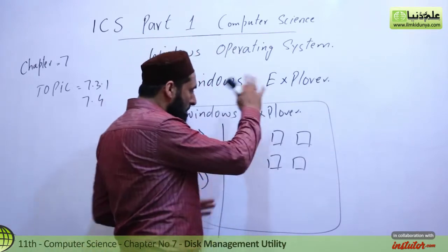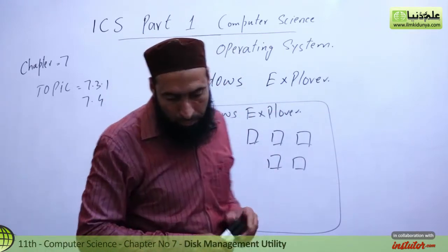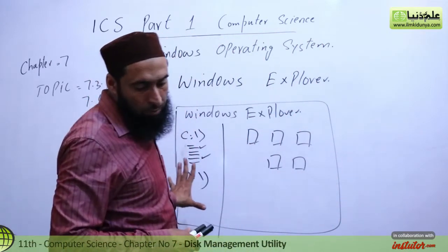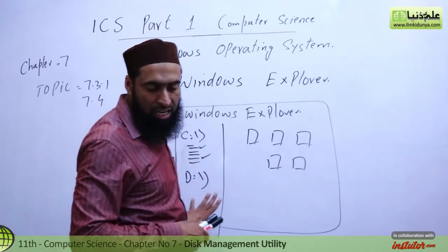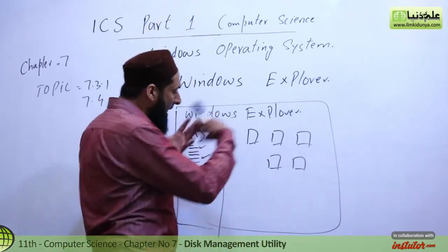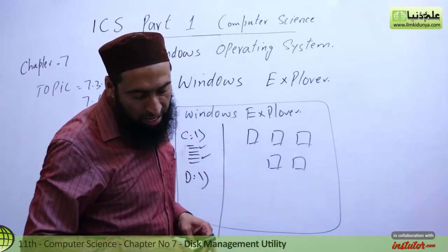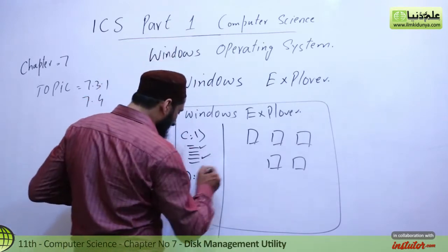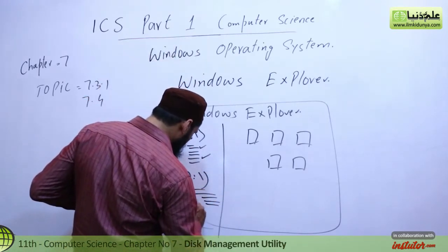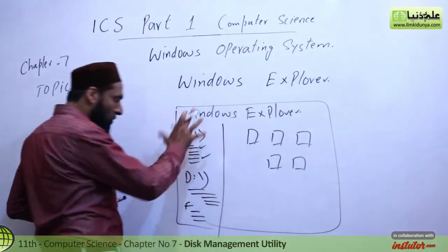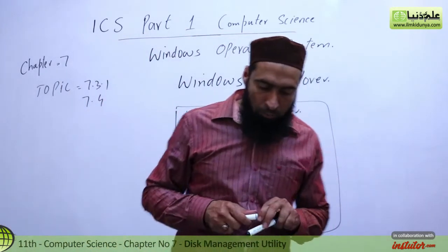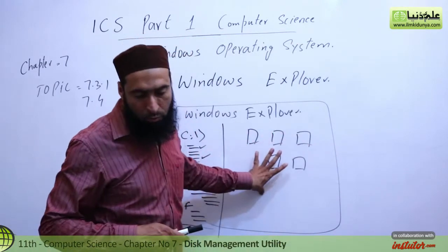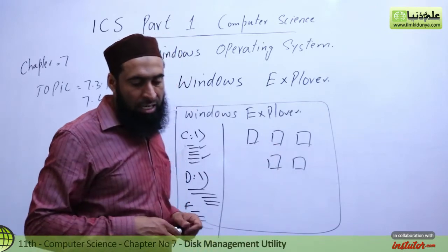Windows Explorer contains two panes. In the left pane there are folders, drives, and details. It displays drivers on your computer in a tree view — a big file, then smaller files inside it, arranged in a tree form.